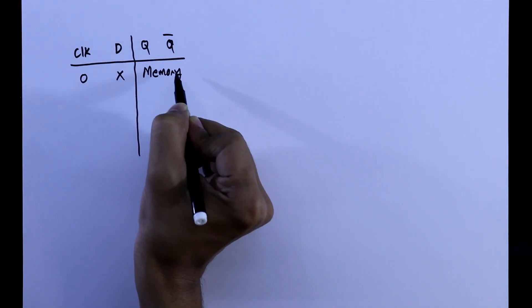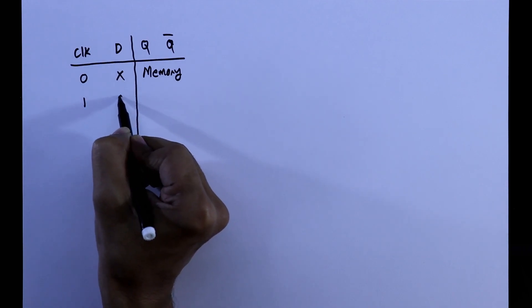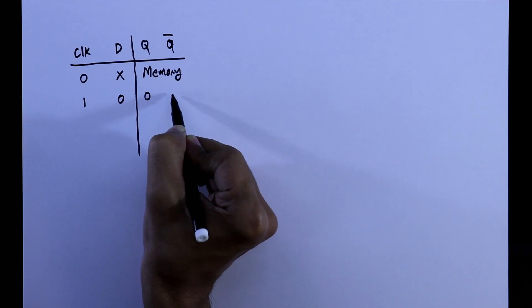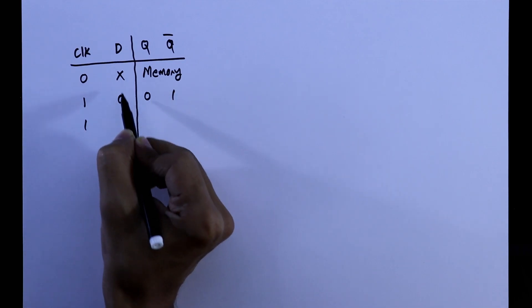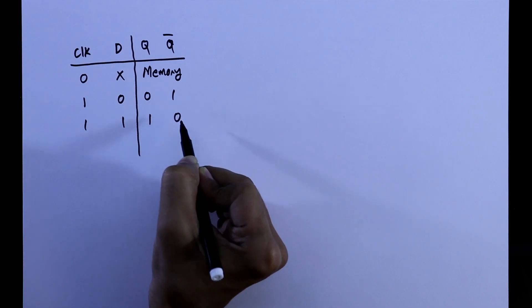That is the previous state. Now clock is 1. If D is 0, then Q will be 0 and Q bar will be 1. And if D is 1, then Q will be 1 and Q bar will be 0.